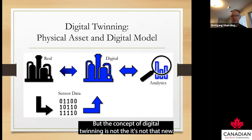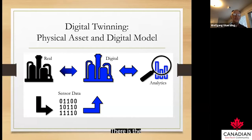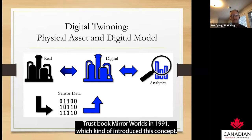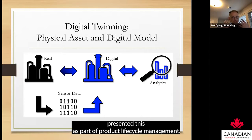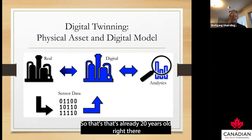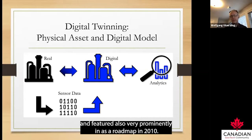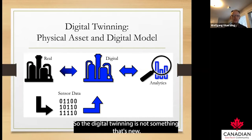The concept of digital twinning is not that new. There is David Gelernter's book 'Mirror Worlds' in 1991, which introduced this concept. Then Michael Grieves in 2002 at the University of Michigan presented it as part of product lifecycle management — so that's already 20 years old. It also featured very prominently in the NASA roadmap in 2010.